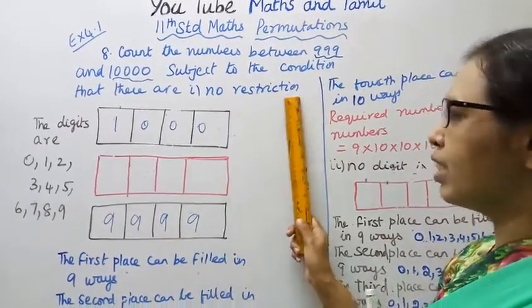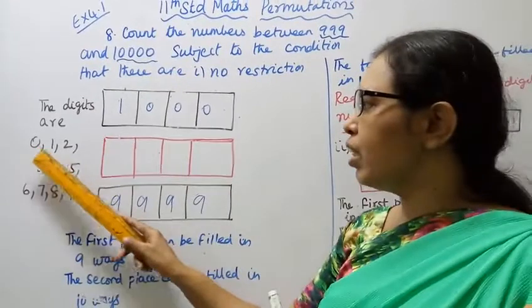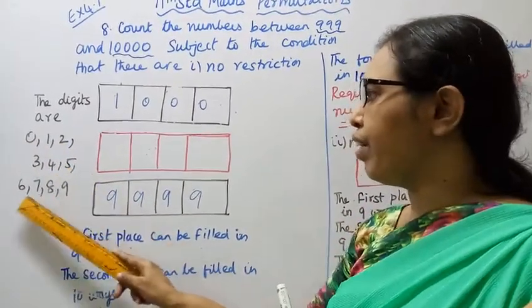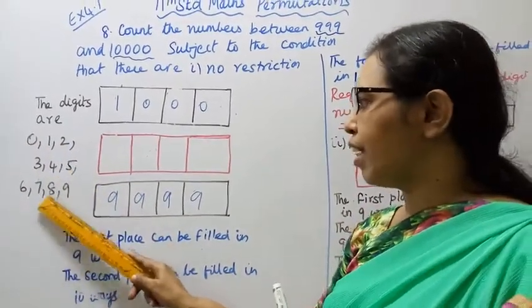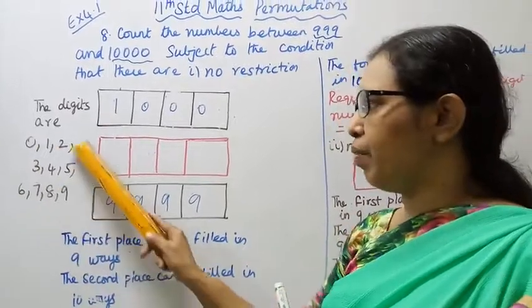With no restriction, the available digits are 0, 1, 2, 3, 4, 5, 6, 7, 8, 9 — so 10 digits in total.